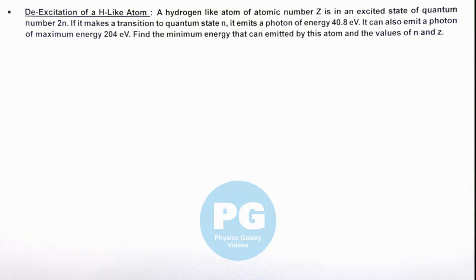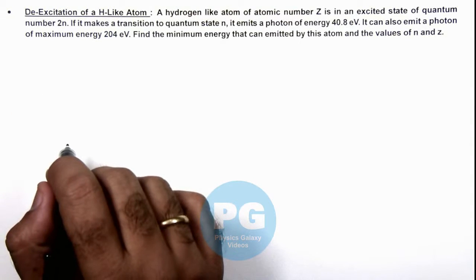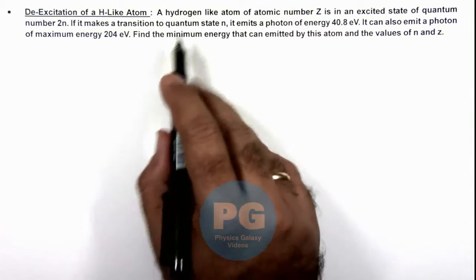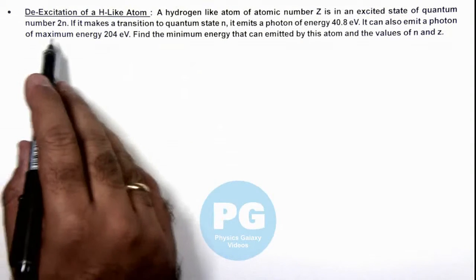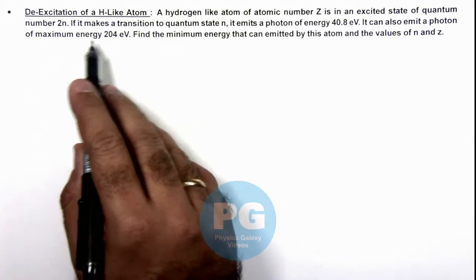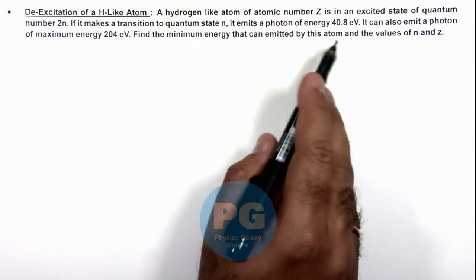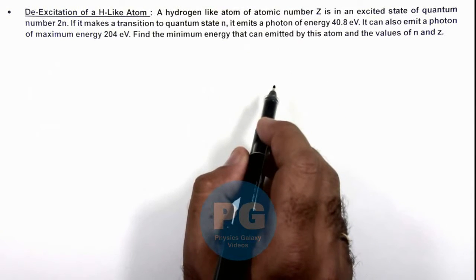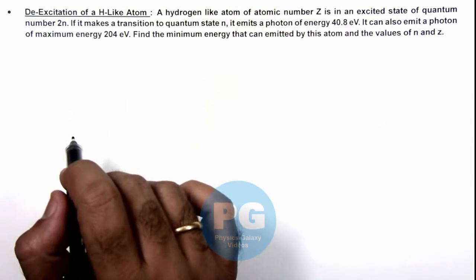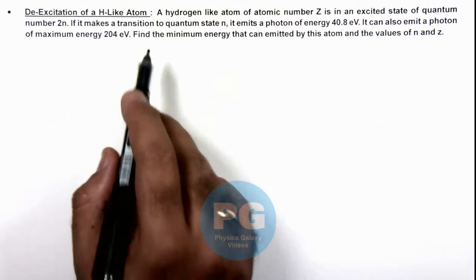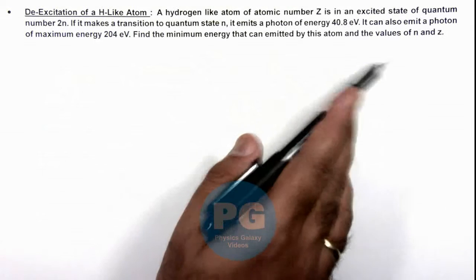This illustration is a discussion about de-excitation of a hydrogen-like atom. We are given that a hydrogen-like atom of atomic number Z is in an excited state of quantum number 2n. If it makes a transition to quantum state n, it emits a photon of energy 40.8 electron volts. It can also emit a photon of maximum energy 204 electron volts. We are required to find the minimum energy that can be emitted by this atom and the values of n and Z.